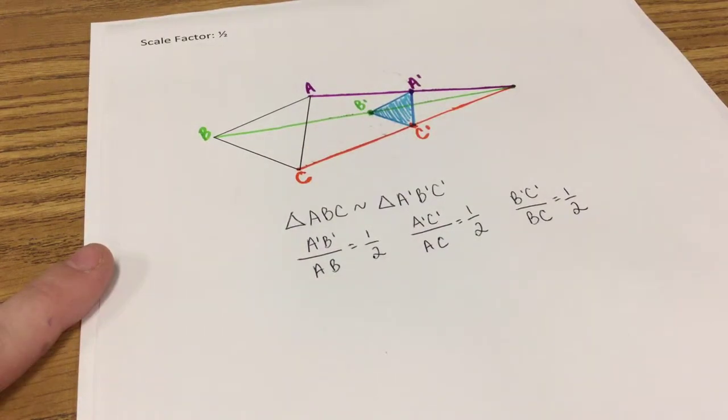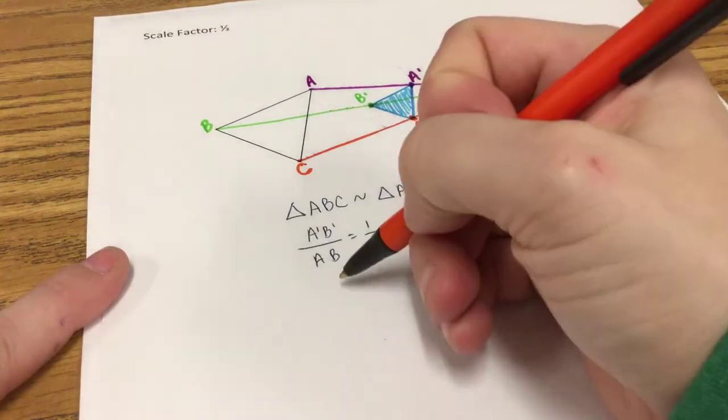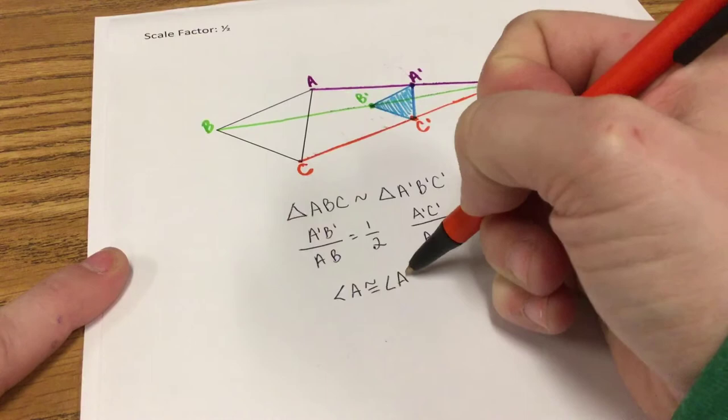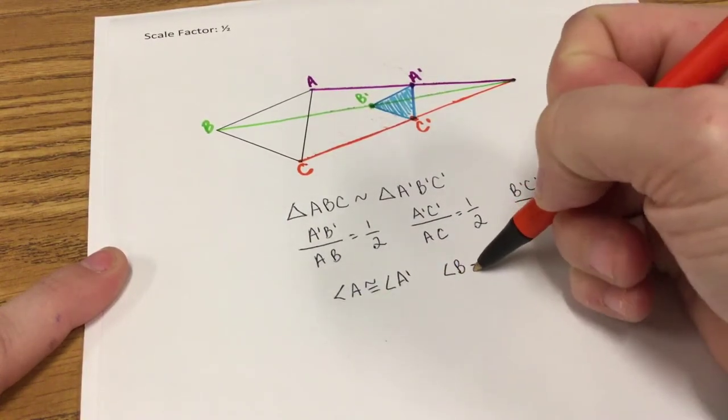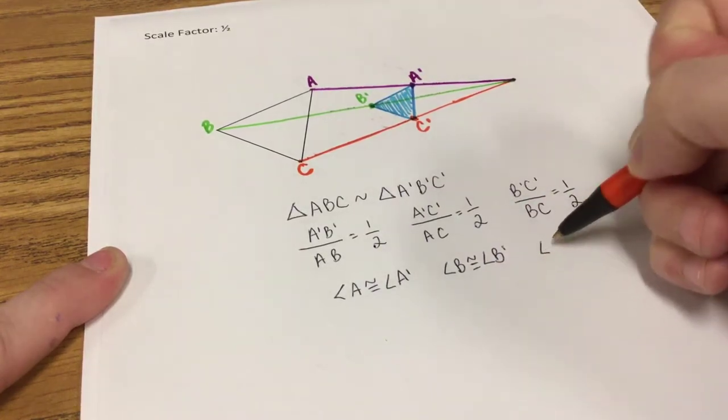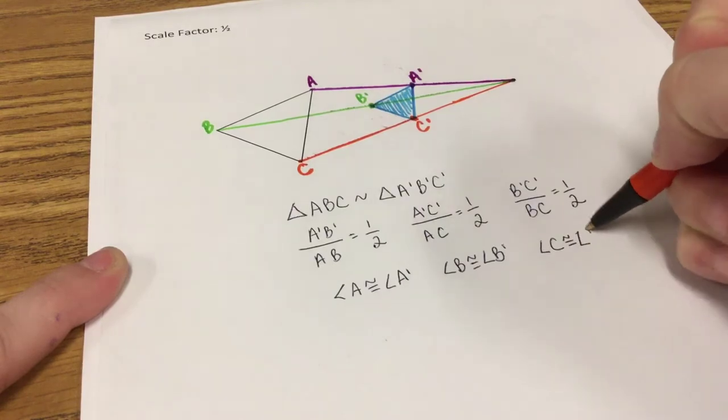Dilations are a similarity transformation. In similarity, we know that the angles are also congruent. So angle A would be congruent to angle A prime. Angle B is congruent to angle B prime. And angle C is congruent to angle C prime.